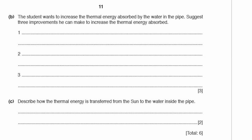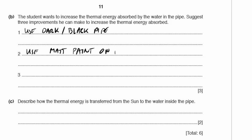Part B: the student wants to increase the thermal energy absorbed. Suggest three improvements. Not using the white plastic pipe would be a good start. Use a dark/black pipe instead — that's one possibility. Another is to use matte paint on it. Another is to use a metal pipe, which will transmit heat much more effectively. Also, if the water moves more slowly, it will spend more time in the pipe getting heated up.